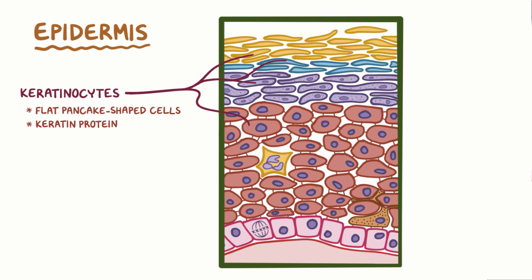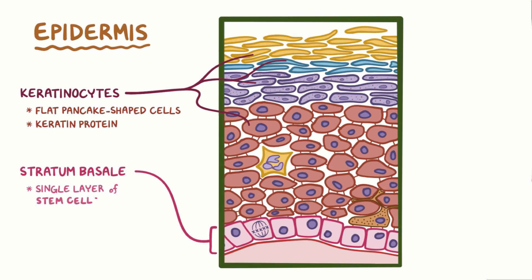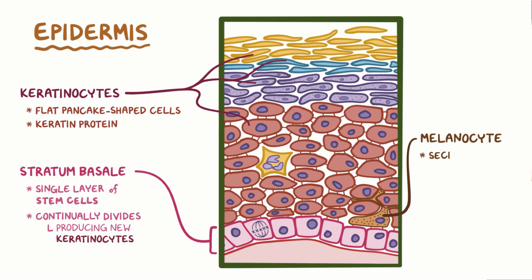Keratinocytes start their life at the lowest layer of the epidermis, called the stratum basale, or basal layer, which is made of a single layer of stem cells called basal cells that continually divide and produce new keratinocytes. The stratum basale also contains another group of cells called melanocytes, which secrete melanin — a pigment protein, or coloring substance.